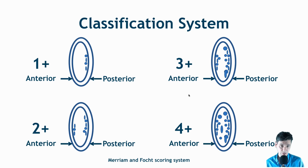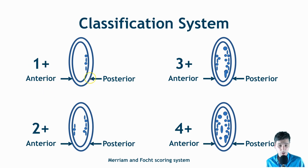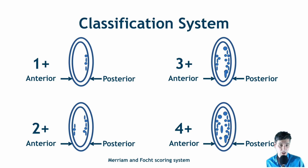As far as a classification system, cataracts typically become worse over time and are rated on a scale from 1 to 4. At level 1, there's a little bit of cataract forming posteriorly. At level 2, you start to have some anterior formation of opaque regions. At level 3, these regions get much larger. And level 4 is the most severe, with very significant coverage both anteriorly and posteriorly.